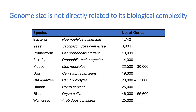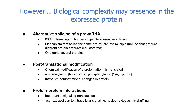These findings have significant implications for how we understand the basic science of how life works, and how regulatory sequences can affect health and disease. However, biological complexity may be present in the expressed protein. First, alternative splicing of a pre-mRNA can yield multiple functional mRNAs corresponding to a particular gene — in humans, about 60 percent of transcripts are subject to alternative splicing. Second, variations in post-translational modifications also contribute; for example, 80 to 90 percent of human proteins are acetylated.